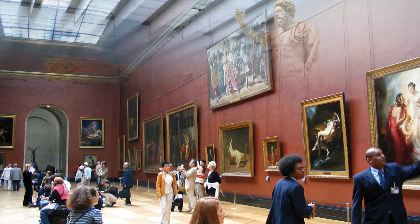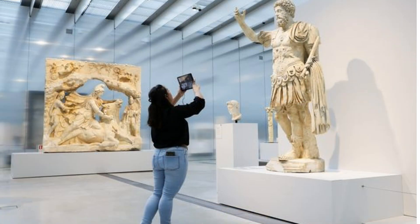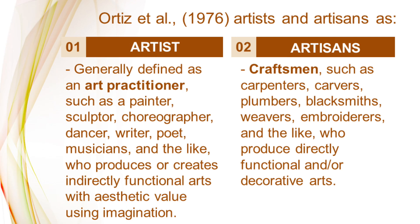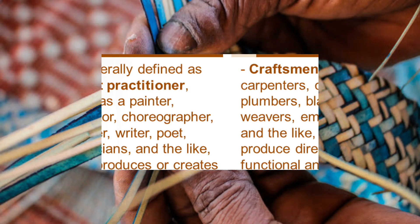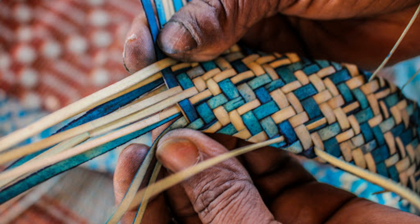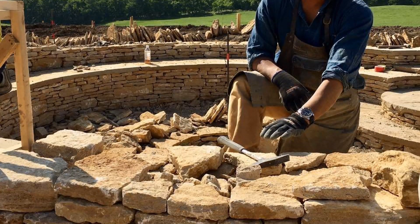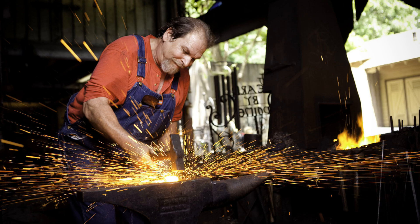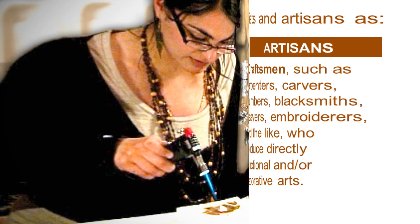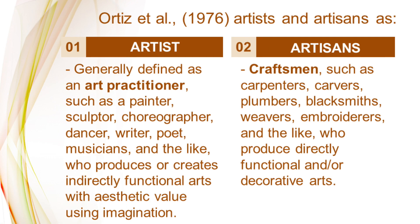The work of artists tends to be shown in museums or galleries. While the artisans are the craftsmen such as carpenters, carvers, plumbers, blacksmiths, weavers, embroiderers, and the like who produce directly functional and/or decorative art. Artisans craft work like jewelry, glasswork, pottery, or other functional products. Artisans' work focuses on accessorizing and functionality more than aesthetics. So artists are more focused on their imagination and emotion, while craftsmen focus on the function of their art.